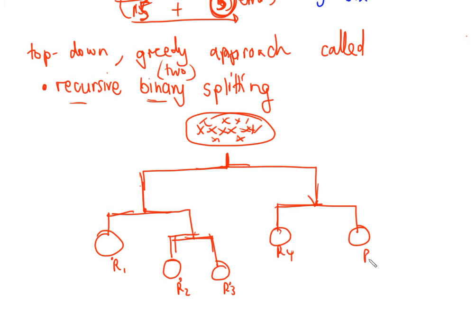It's called greedy because at each step the best split is made at that particular step. We do not look forward to consider how a split now might affect splits later. At each node, we ask: what is the best split at this step? Then we split and move on, without caring about what happened before or what will happen in the future.